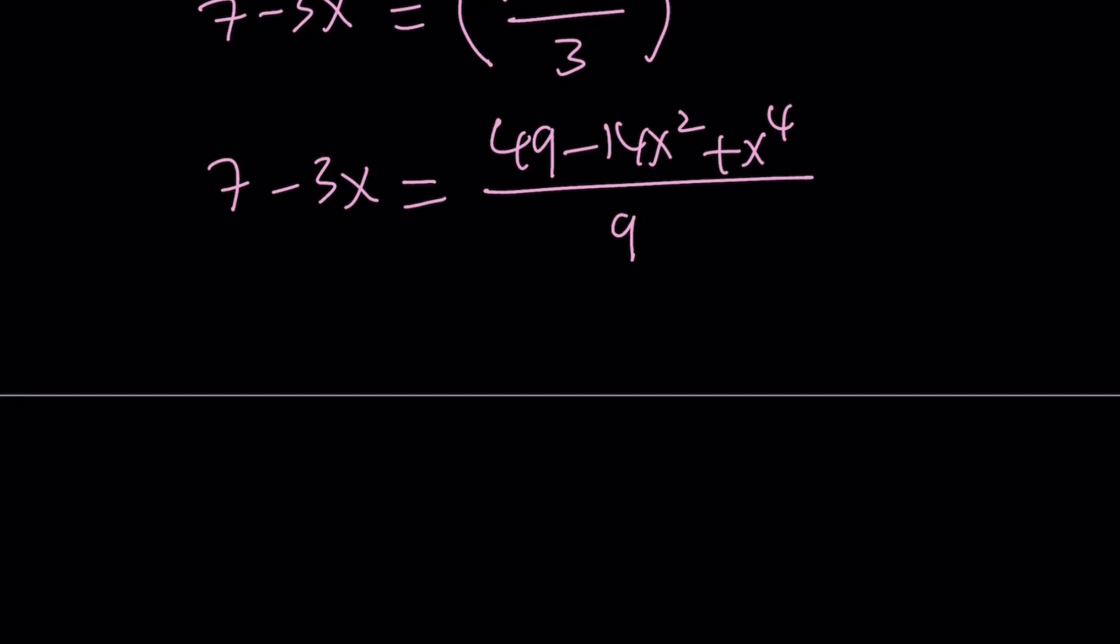Let's go ahead and cross multiply this. 63 minus 27x equals 49 minus 14x squared plus x to the fourth. If I put everything on the same side, it's going to be a quartic equation which means fourth degree.